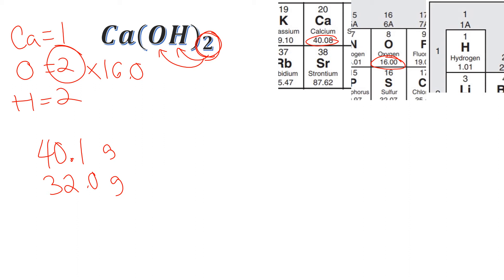When you look at hydrogen, it's 1.01. We'll just round that to one, but again, there's two of them. So it's two times one. That's going to give me a two there. And again, that's two grams per mole.